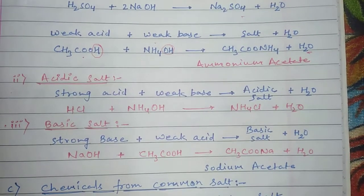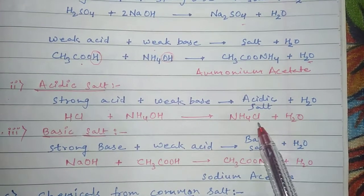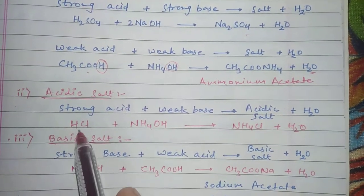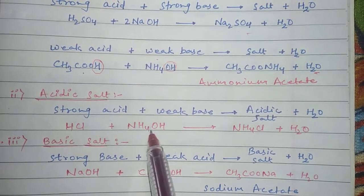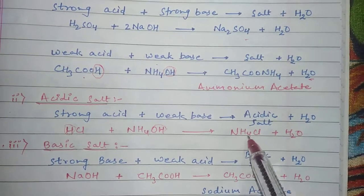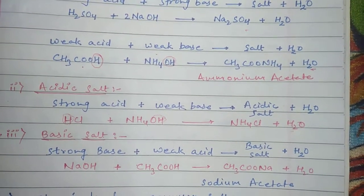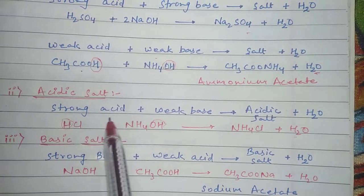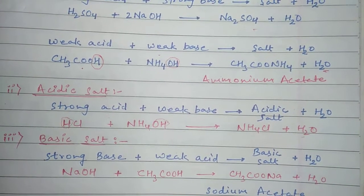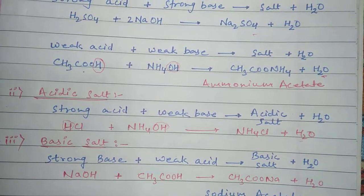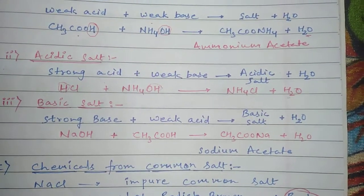Now we will talk about acidic salt. Whenever a strong acid reacts with a weak base, the salt formed is an acidic salt. For example, the strong acid is HCl and the weak base is ammonium hydroxide. Water is formed, and the remaining parts of the acid and base form the acidic salt. It is acidic because the strong acid completely neutralizes the base, and the acidic strength remains in the solution.